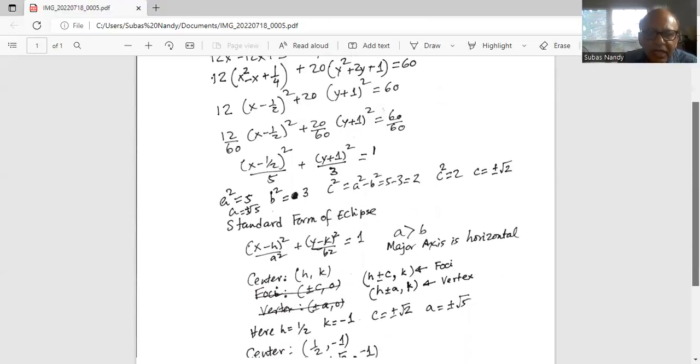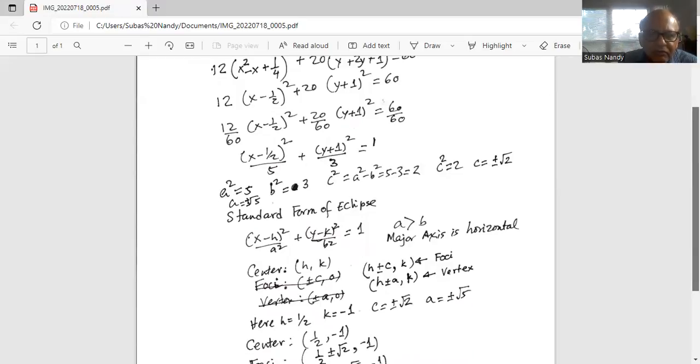So here h is half, k is minus 1, y minus 1, because we have y plus 1. So it is y minus minus 1. That's why k is minus 1, c is plus minus square root of 2 and a is plus minus square root of 5.